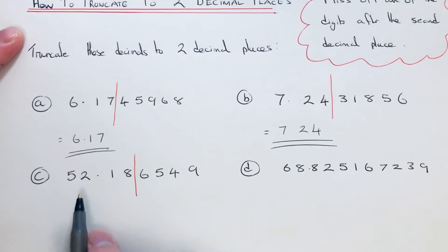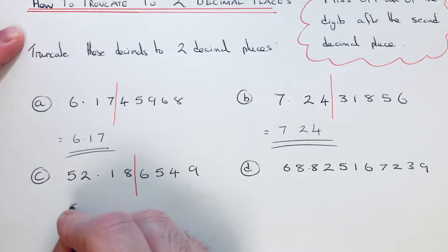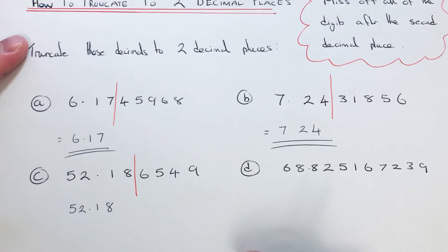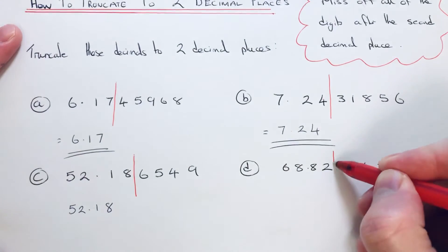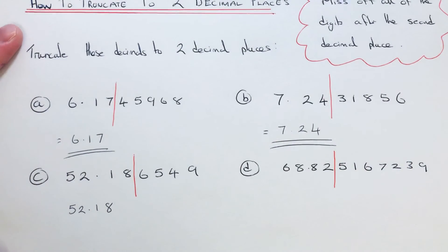So we just copy down the digits before that red line. The final example then: again, we're putting the line in here.